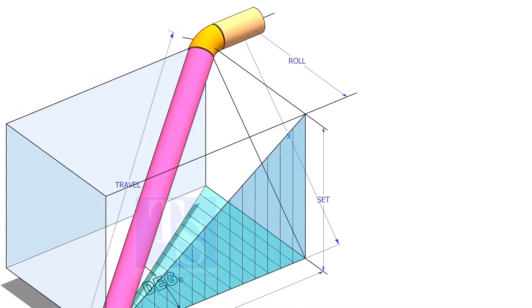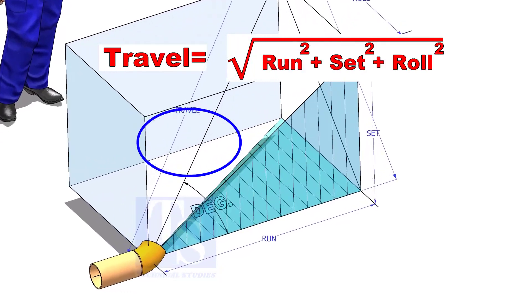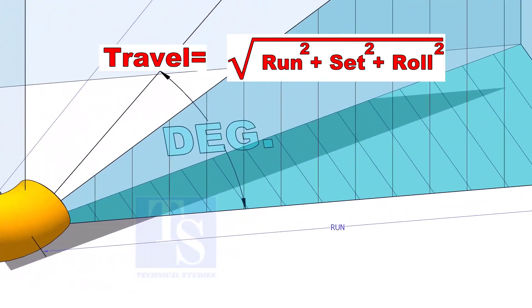The formula to calculate the travel length is the square root of the sum of run squared, set squared, and roll squared.